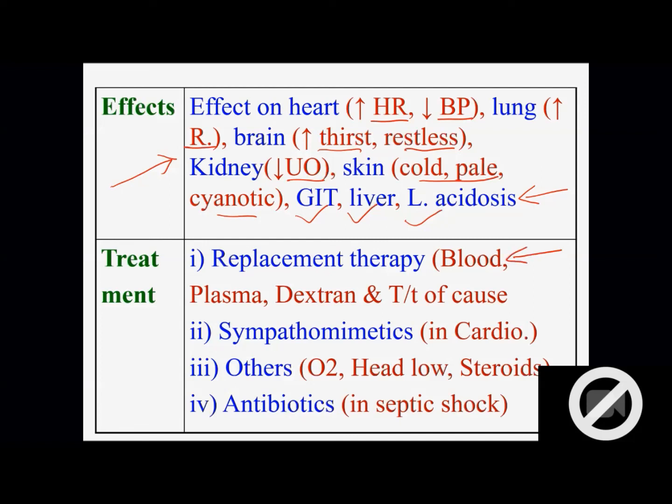So treatment depends on the cause of shock. Upper one is common treatment - every patient gets leg elevation, steroid and oxygen. Lower one is specific depending upon cause. Replacement therapy: hemorrhagic shock give blood, burn give plasma. We can give plasma expander like Dextran. If there is cardiogenic shock give drugs like digitalis which increases heart contraction - sympathomimetic drugs. In septic shock antibiotics and antiviral.